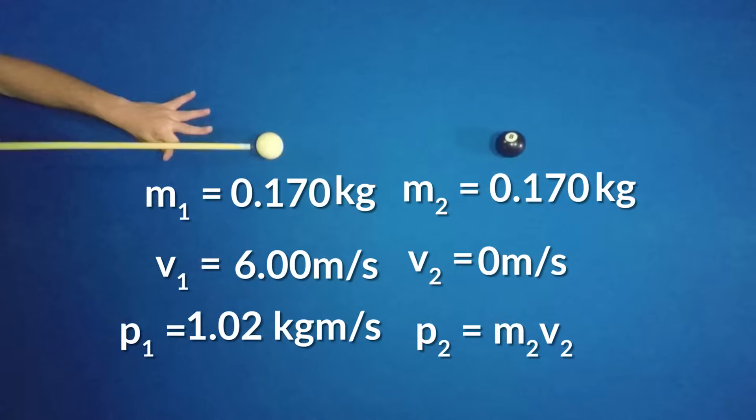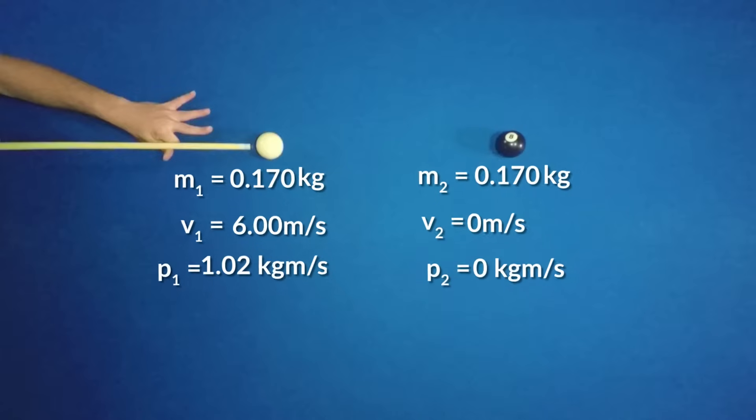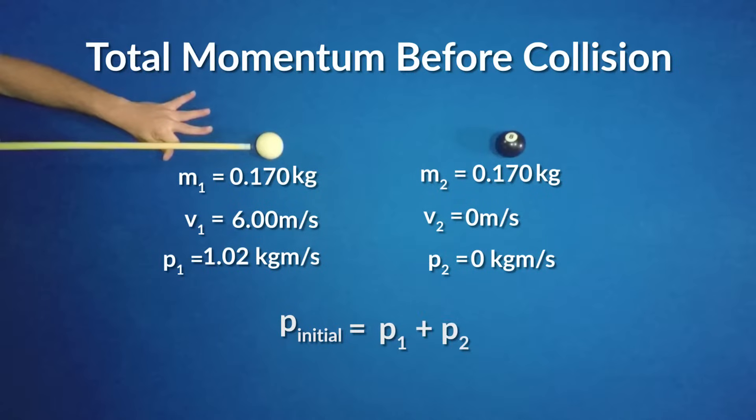Since objects at rest do not have momentum, the eight ball begins with zero momentum. So the total momentum of the cue ball and the eight ball together before the collision is also 1.02 kilograms meters per second. And because momentum is conserved, 1.02 kilograms meters per second is the system's total momentum after the collision too.